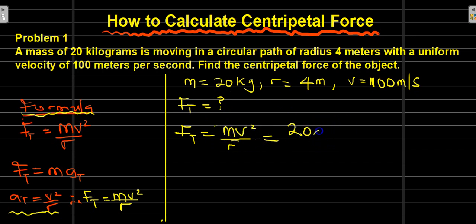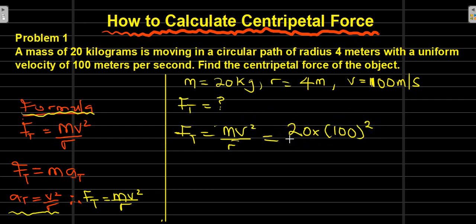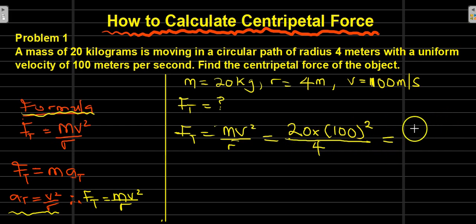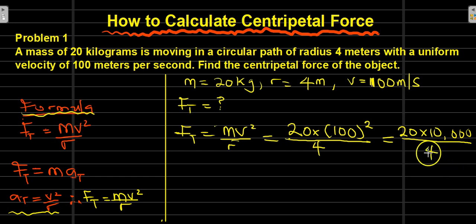This is going to give us: remember that our mass is 20, so we write 20. Between m and v there is a multiplication sign. We have v equals 100, so v² is 100 squared, which is 10,000. So we have 20 kg times 10,000 all over 4, which is the radius.